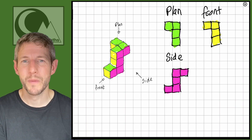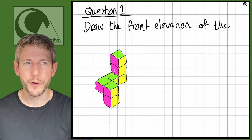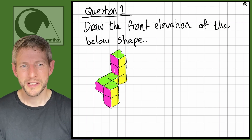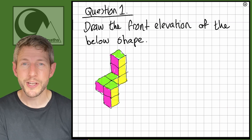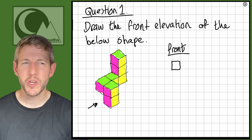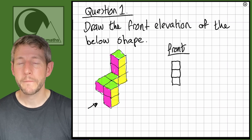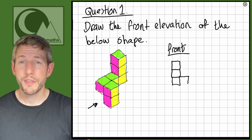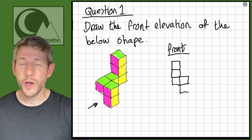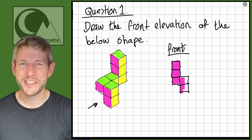Let's have a go at some questions. Question one says: draw the front elevation of the shape below. We have an interesting shape made up of cubes, and the front elevation means the pink sides. Starting from the top square, there's another pink square directly below it, then another below that — even though it's been pushed forward a bit — then a square to the side, and a square below that. So here is our front elevation.